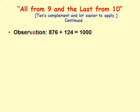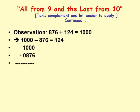From the previous examples we noticed that 876 plus 124 is 1000. That means 1000 minus 876 must be 124. So if we subtract 876 from both sides, the right side becomes 1000 minus 876 and the left side becomes 124.